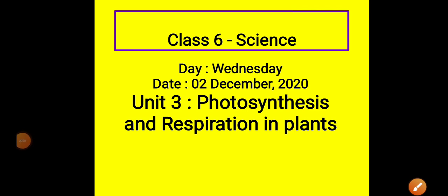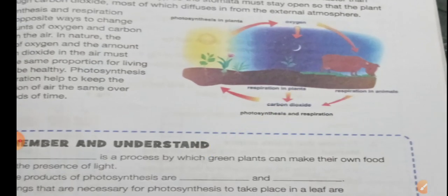Good morning, class. I am your science teacher. Students, today is Wednesday and the date is 2nd December. As you know, we are reading our chapter on photosynthesis and respiration in plants. Please open your books to page number 35. Today we are going to talk about the oxygen and carbon dioxide balance in nature.